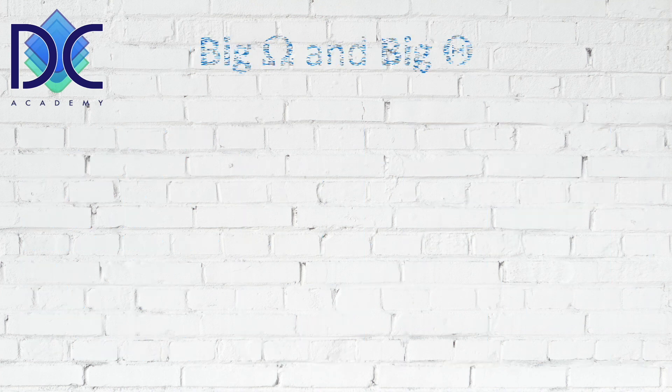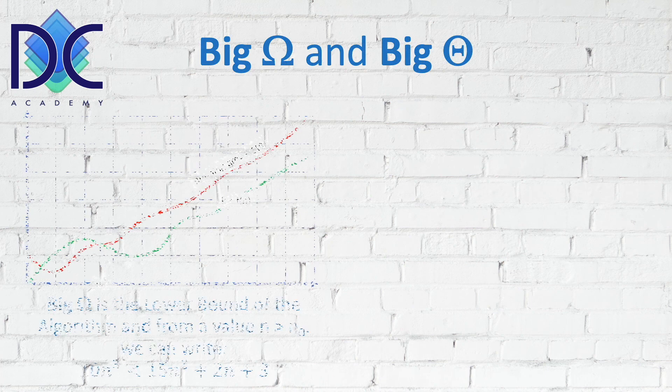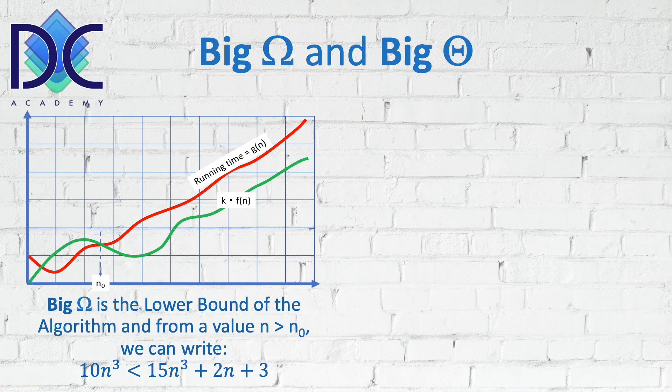On the other hand, we also have Big Omega and Big Theta. Big Omega is the lower bound of the algorithm — we do the same thing, but now from a number n greater than n₀ we can write that 10n³ is always smaller than 15n³ + 2n + 3. So Big Omega is also n³. In algorithms, we don't really care so much about the lower bound — we are more interested in the upper bound, which is Big O.